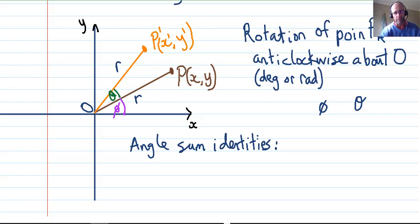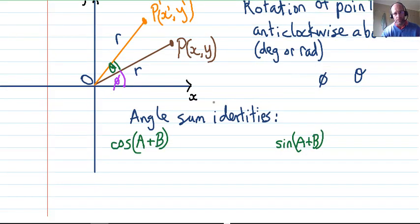These are something you may have looked at or are going to look at in the near future, and they may be on a formula sheet. The angle sum identity for cosine is cos(A+B) = cosAcosB - sinAsinB.